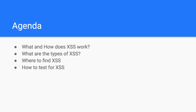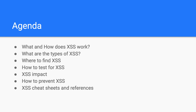And then we will move to how to test for cross-site scripting, covering different approaches from manual to automated. We will talk about cross-site scripting impact and what you can do with it once you've found it. Then we will talk about how to prevent cross-site scripting and a little bit about cross-site scripting filter bypass. By the end of this video, I will share cross-site scripting cheat sheets and references for you to dig deeper.